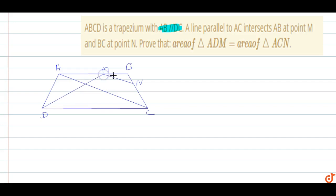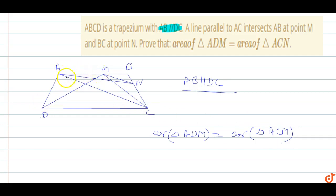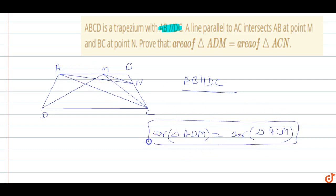First, we draw line AM to C. Since AB is parallel to DC, the area of triangle ADM equals the area of triangle ACM, because triangles ADM and ACM share the same base AM. So area of triangle ADM equals area of triangle ACM — this is equation one.